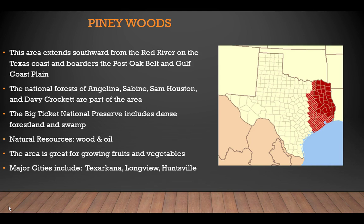The Piney Woods is an area that extends from the Red River to the Texas coast, bordering the Post Oak Belt and Gulf Plains. The National Forests of Angelina, Sabine, Sam Houston, and Davy Crockett are part of this area. The Big Thicket National Preserve includes dense forest land and swamp. Natural resources include wood and oil. The area is also great for growing fruits and vegetables. Major cities include Texarkana, Longview, and Huntsville.